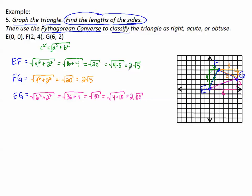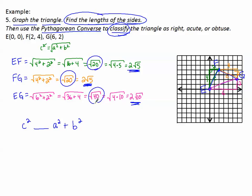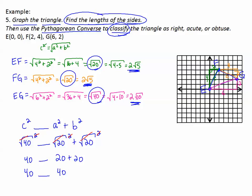So I have lengths 2√5, 2√5, and 2√10. Now I need to classify the triangle. The largest is √40, so: c² blank a² + b² — that's √40 squared, blank √20 squared plus √20 squared. Squaring cancels the square roots, giving 40 compared to 20 + 20. Forty equals forty, so they are equal — therefore this is a right triangle.